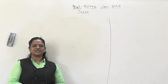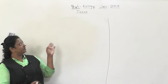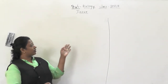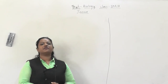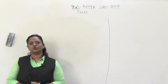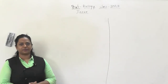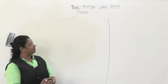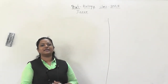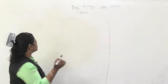Good morning dear students. We are learning our lesson on tissue from Class 9. We have already talked about meristematic tissue and seen everything related to it - three types of meristematic tissue. Now we are going to talk about other plant tissues. There are mainly two types of plant tissues.